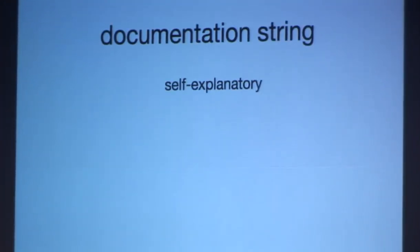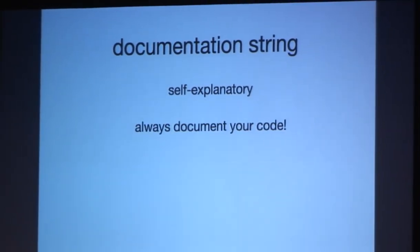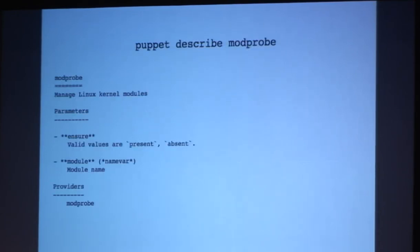So documentation string, self-explanatory. But really, you should always document your code. One nice thing about the doc strings are that the output of the doc strings will be a Puppet describe insert type here. So in our doc string, which is managed Linux kernel modules, the output from Puppet describe modprobe actually looks something like this, where you can see our actual doc string, as well as the parameters, which we'll get to in a little bit, and the providers that actually implement this type.